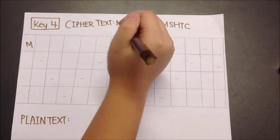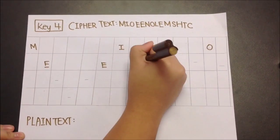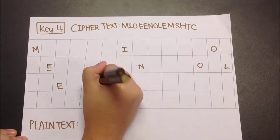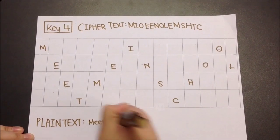Next, replace the dashes with letters from the cipher text row by row. Then, read the completed grid diagonally to get the plain text.